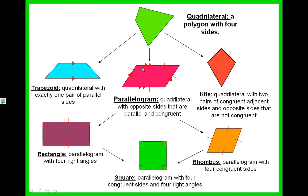A parallelogram is a quadrilateral with opposite sides that are parallel and congruent. If you look at the top and bottom of this parallelogram, they're both parallel and congruent, as well as the left and right sides — they're both parallel and congruent.